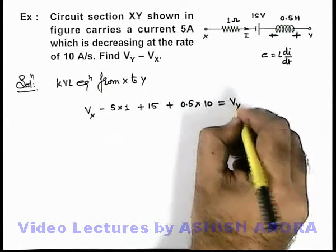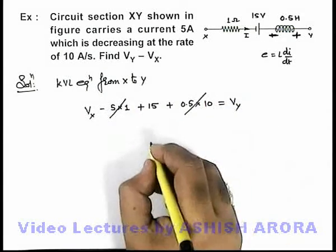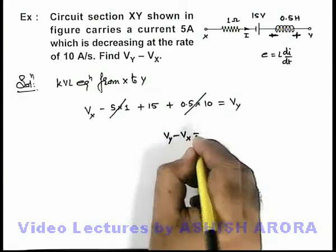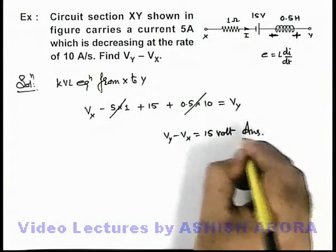So this will be equal to the potential at point y. Here this 5 and this 5 gets cancelled out, and we can see the value of Vy minus Vx we are getting is 15 volts. That will be the answer to this problem.